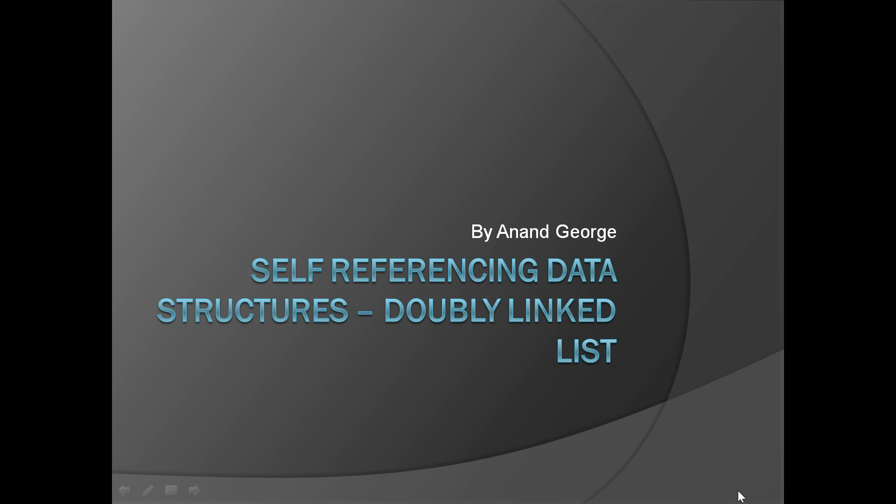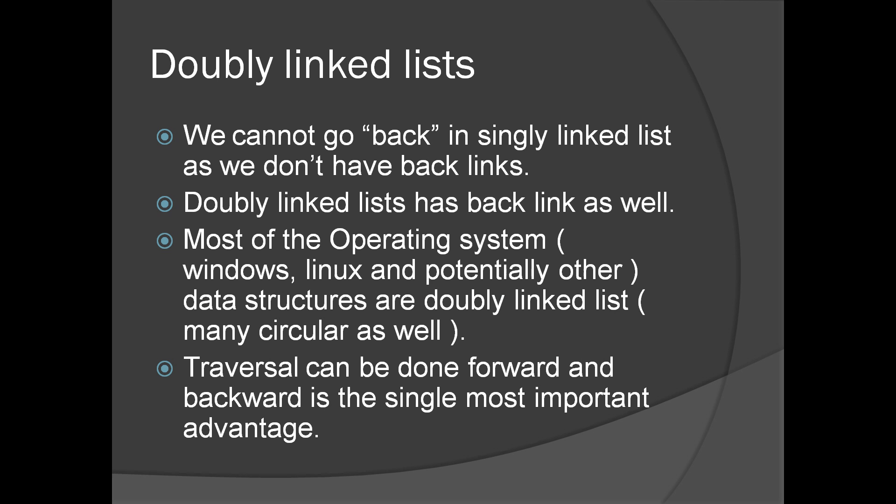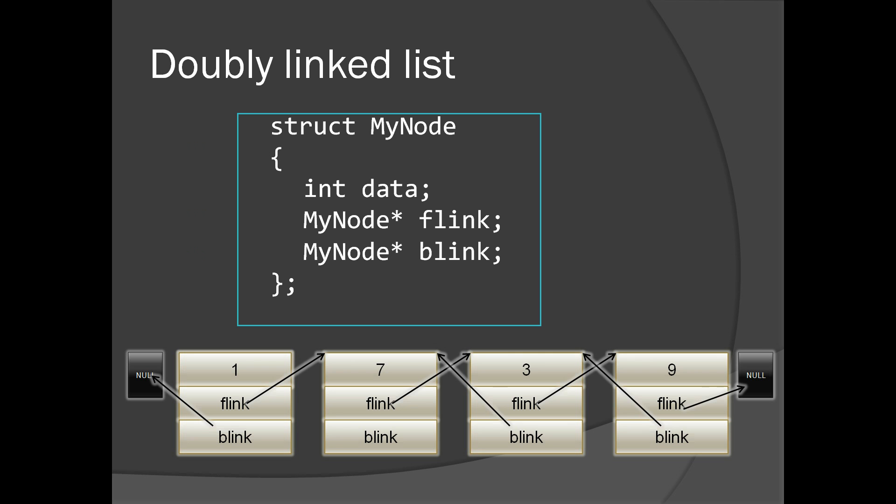In this presentation we're going to look at doubly linked lists. A doubly linked list has two links: one is back and one is forward, so we can go back and forward. Doubly linked list is an important data structure — most operating systems, Windows, Linux, and potentially others, use this data structure internally. Traversal can be done forward and backward, which is the single most important advantage of a doubly linked list.